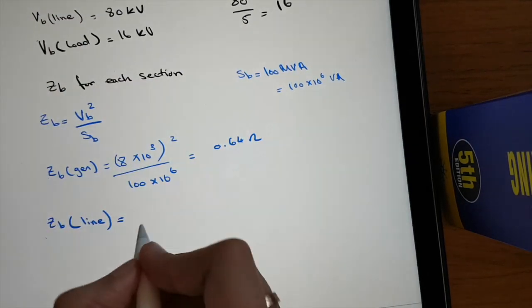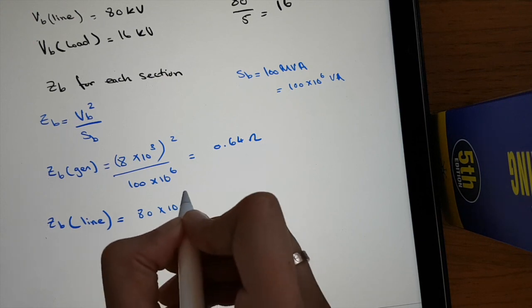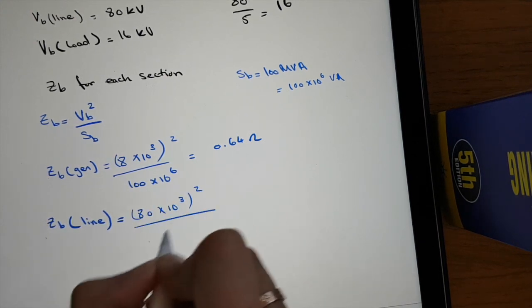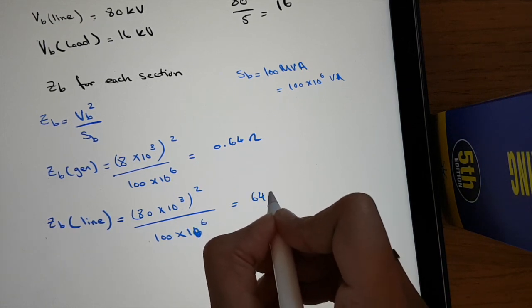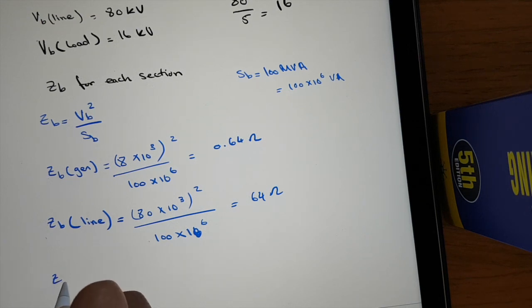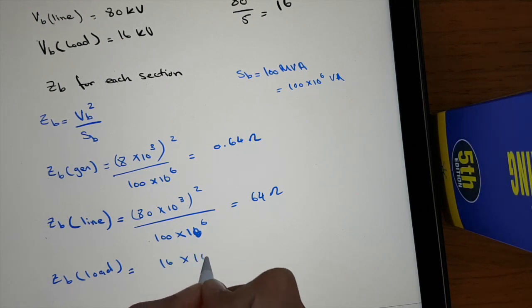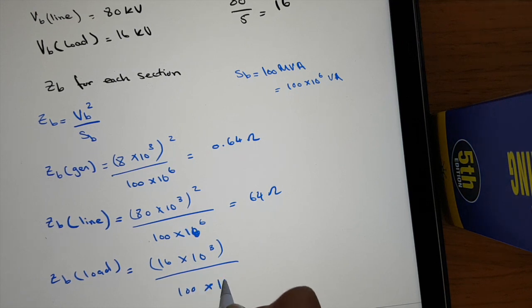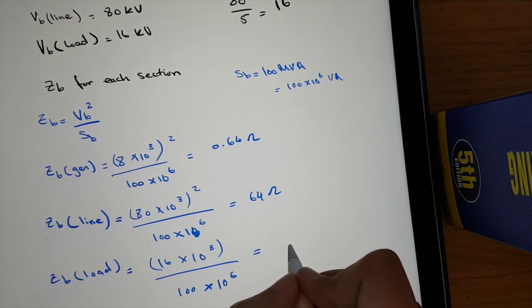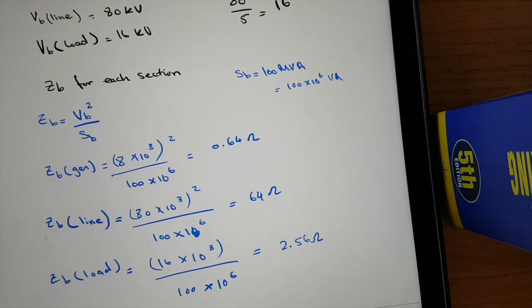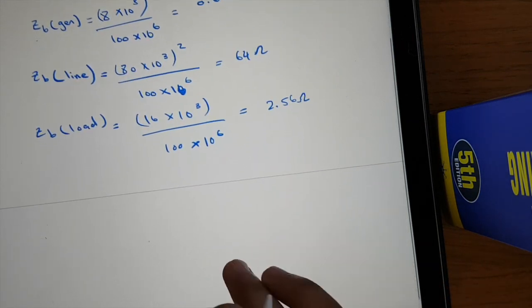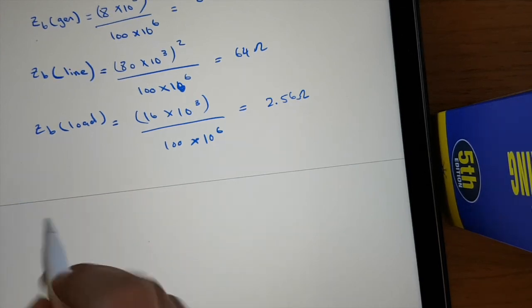For the line section: Z_base = (80×10³)² / (100×10⁶), which gives us 64 ohms. For the load section: Z_base = (16×10³)² / (100×10⁶), which gives us 2.56 ohms.